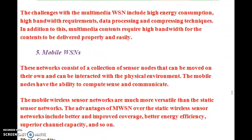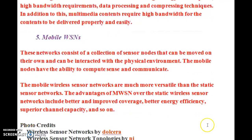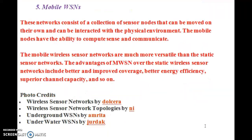Mobile WSNs consist of a collection of sensor nodes that can be moved on their own and can interact with the physical environment. The mobile nodes have the ability to compute, sense, and communicate. Mobile wireless sensor networks are much more versatile than static sensor networks. The advantages of mobile WSNs over static wireless sensor networks include better and improved coverage, better energy efficiency, and superior channel capacity.